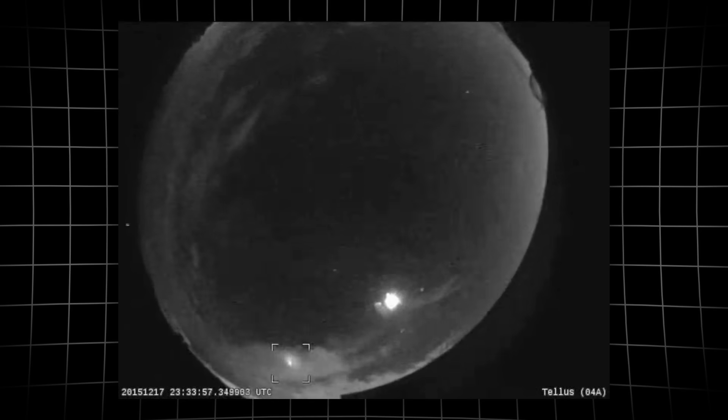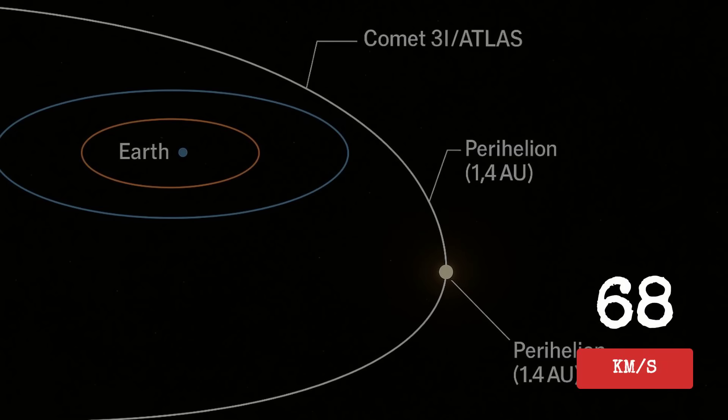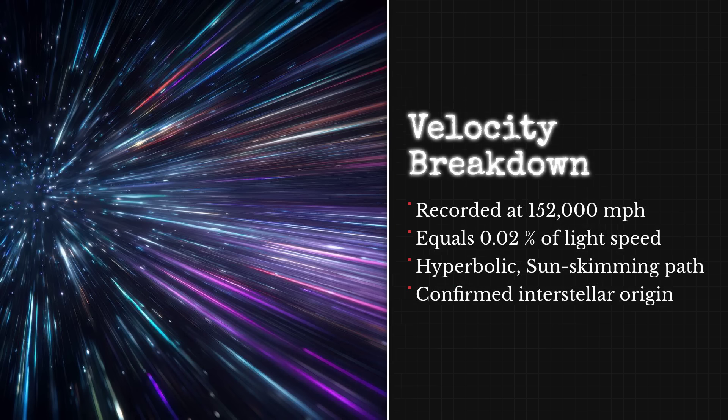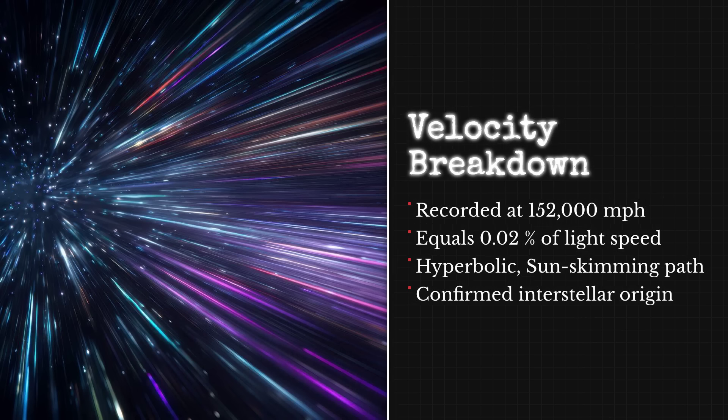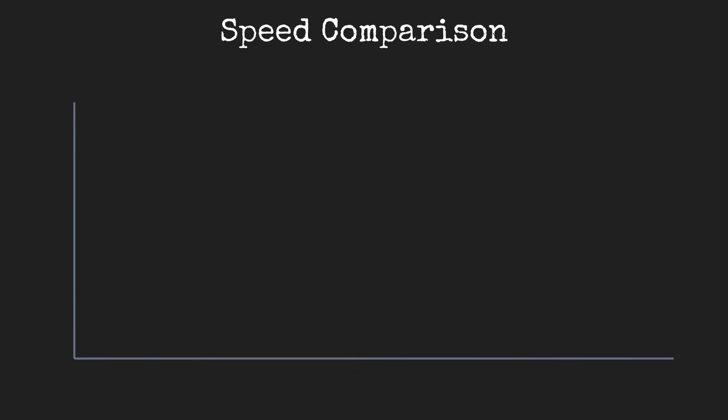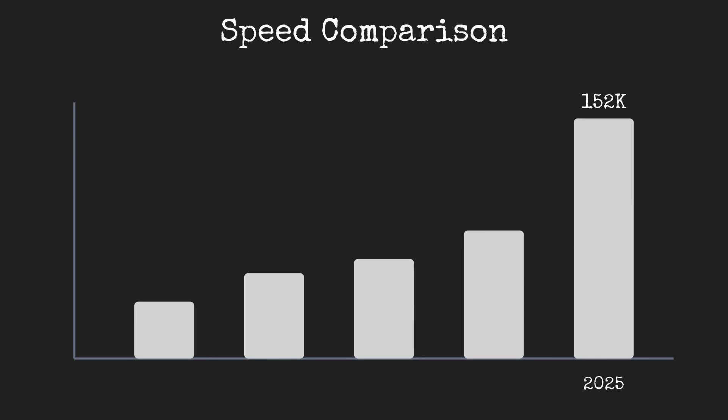Second, its speed is extraordinary. When first detected, it was moving at approximately 58 kilometers per second. During perihelion, it will accelerate to 68 kilometers per second. That's about 152,000 miles per hour, or roughly 0.02% the speed of light. That's significantly faster than typical comets originating from our Oort cloud.